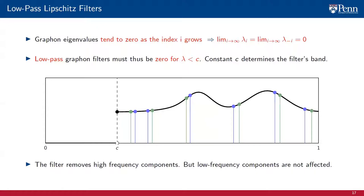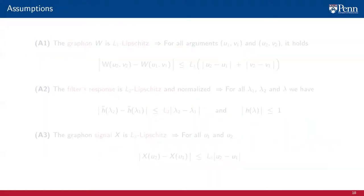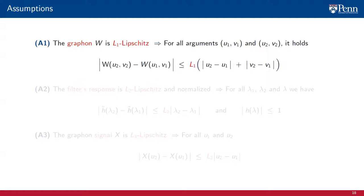To derive those approximation bounds, we need to introduce a set of Lipschitz assumptions on the graphon, the filter, and the graphon signal. First, we require the graphon to be Lipschitz with Lipschitz constant L1. That is, for all pairs of arguments U1 V1 and U2 V2, it holds that the absolute value of the difference of the graphon evaluated at U1 V1 and of the graphon evaluated at U2 V2 is bounded by the Lipschitz constant L1 times the sum of the absolute value of the difference between U1 and U2 and the absolute value of the difference between V2 and V1.